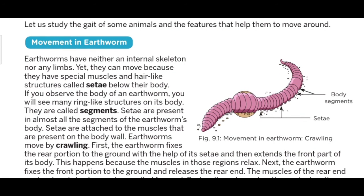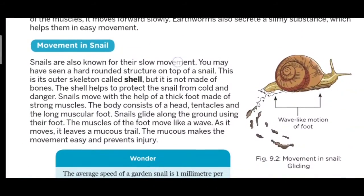Moment in earthworm — earthworm के movement के बारे में study करते हैं। Earthworms have neither an internal skeleton nor any limbs, yet they can move because they have special muscles and hair-like structures called setae below their body. If you observe the body of an earthworm, you will see many rings. वो इन rings की मदद से body के parts को छोटा और बड़ा करके एक place से दूसरे place तक move कर पाते हैं।